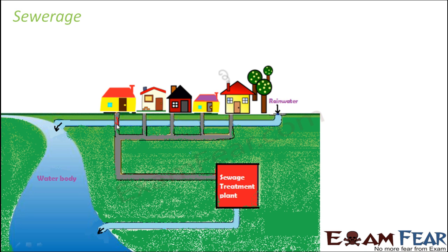The sewage from the houses comes through these pipes, all joining in a bigger pipe, and then gets transported to the sewage treatment plant. In the sewage treatment plant, the pollutants will be removed from the wastewater. The water coming out after treatment is clean water — here shown in blue, while dirty water was black. This clean water is then disposed of into water bodies such as ponds, rivers, lakes, or oceans.